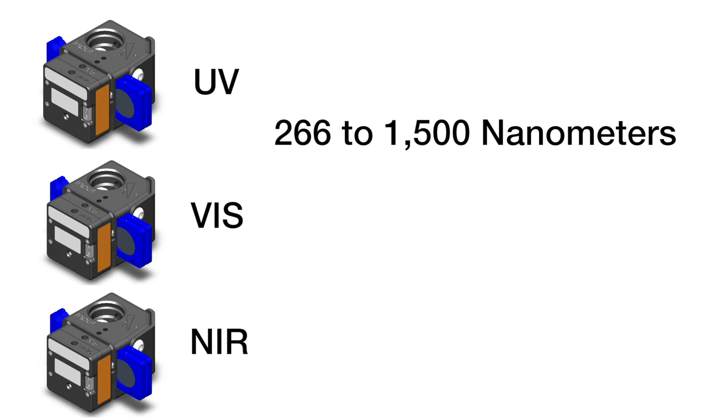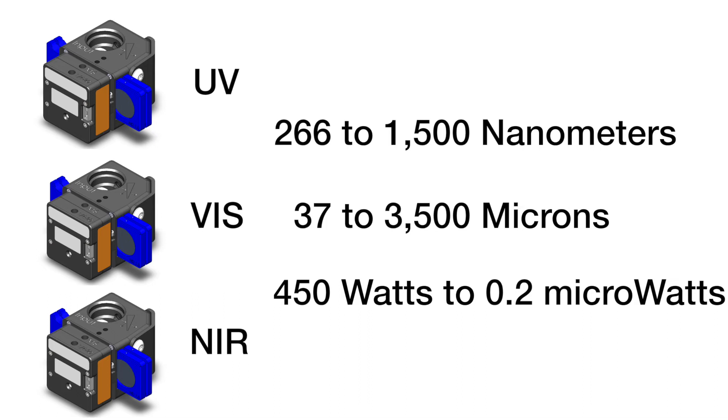The focal spot analyzer measures laser beam diameters from 37 to 3500 microns and can safely measure lasers with average powers up to 450 watts and as low as 0.2 microwatts.